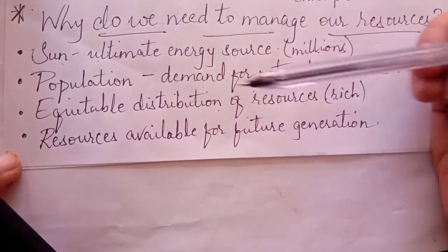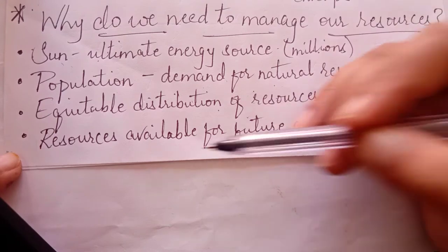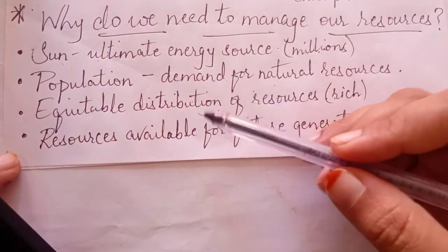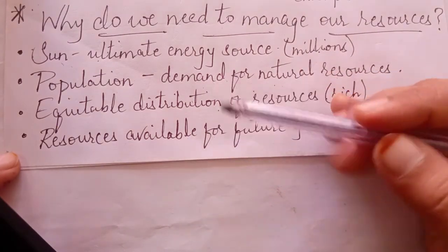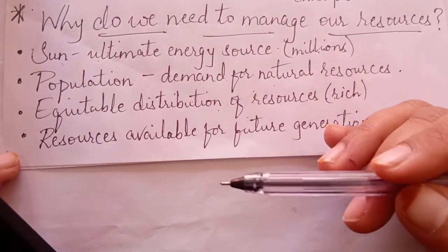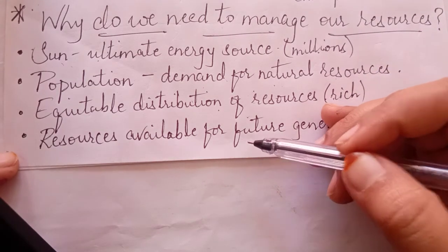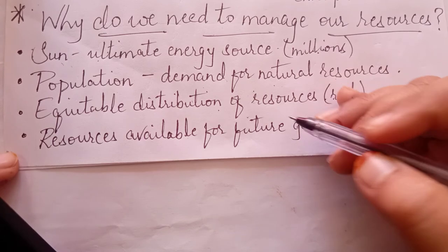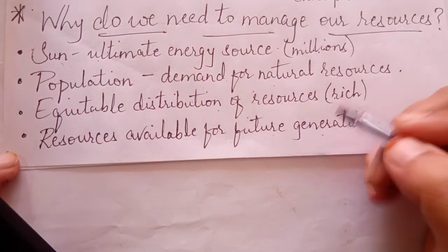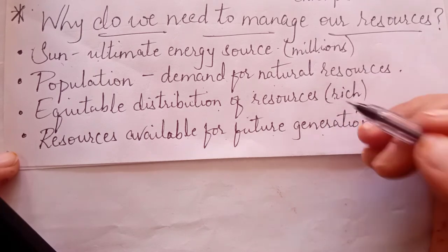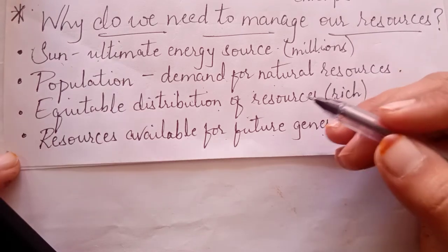Next is resources available for future generation. The very important aspect for sustainable management of resources is we want to keep the resources which are present today or which are going to be exhausted in the future in the coming years. We are working really very hard so that we can make those resources available for the future generation, whether it's coal, petroleum, diesel, or whatever the other resources are there - plants and animals and different kinds of things.